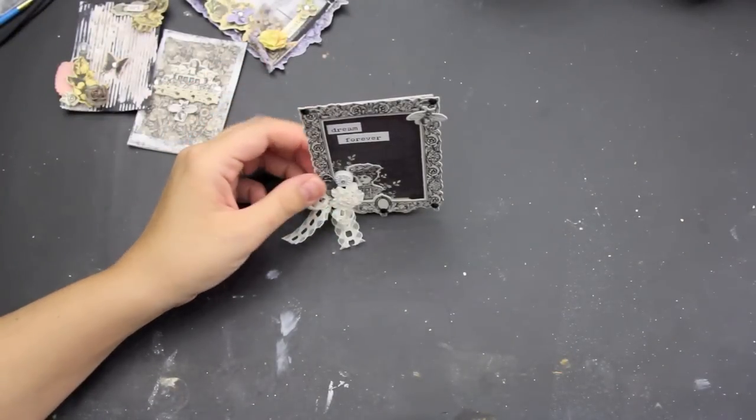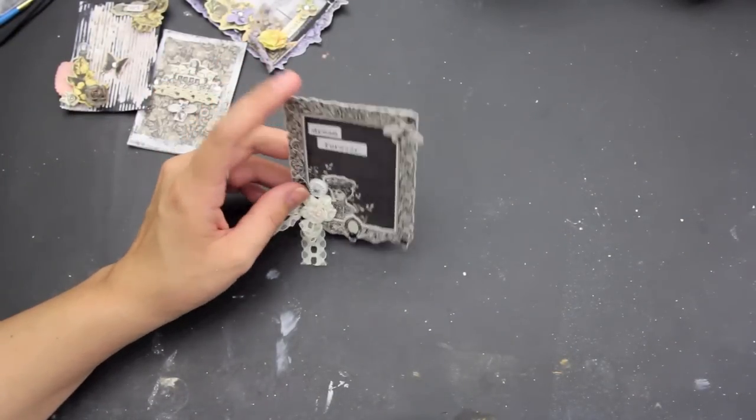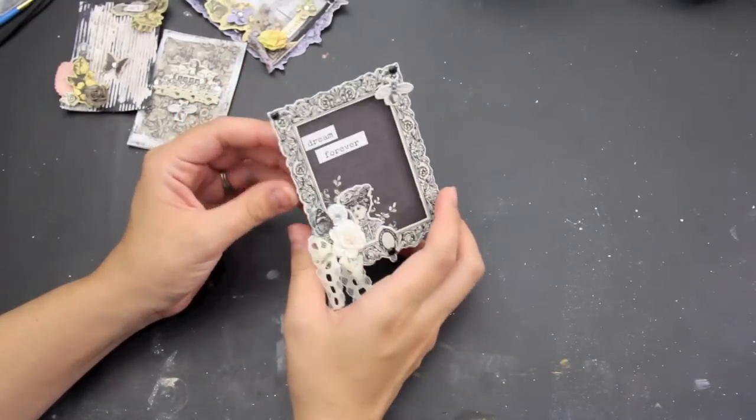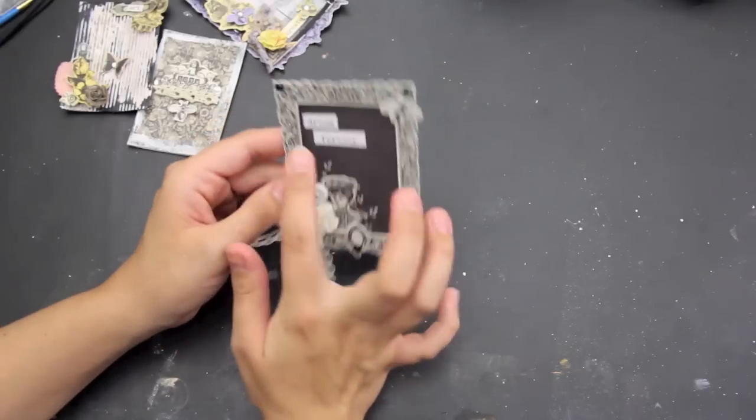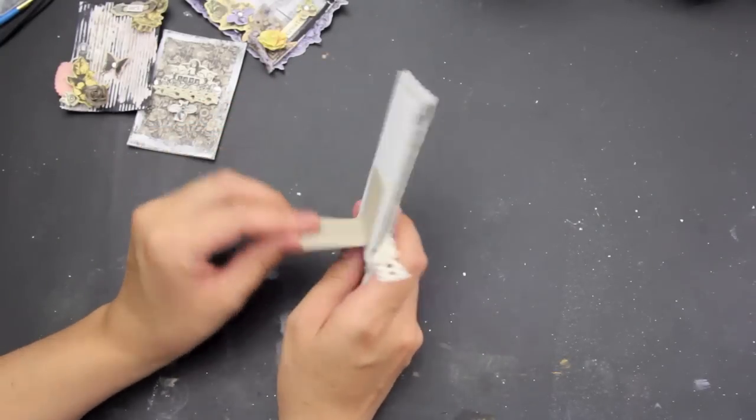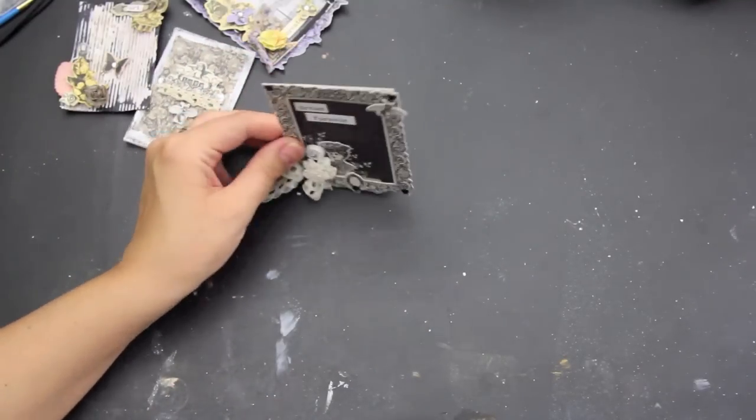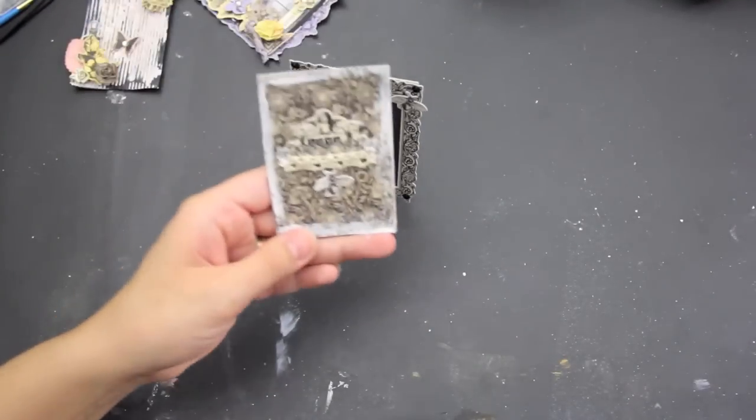Hi, I'm Tiffany. I'm an education team designer for SwirlyDos.com and today I'm going to be sharing how I made this little ATC type shadow frame. I put a little stand on the back so it could stand up instead of just having a flat ATC like this one.